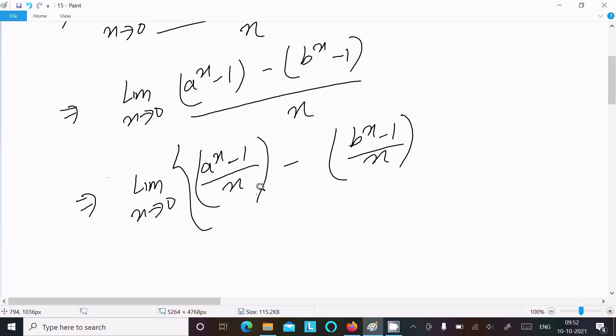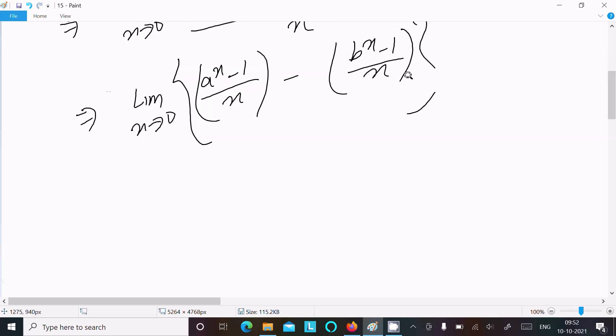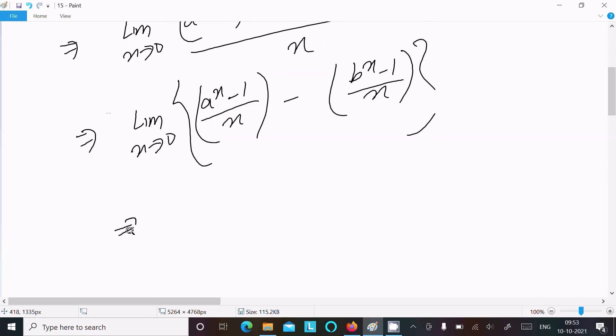So after that we have the formula. If you want to write them separately you can also do that. Writing here limit x tend to 0, a power x minus 1 divided by x minus limit x tend to 0, b power x minus 1 divided by x. So we have the formula limit x tend to 0, a power x minus 1 divided by x that is equal to log a.